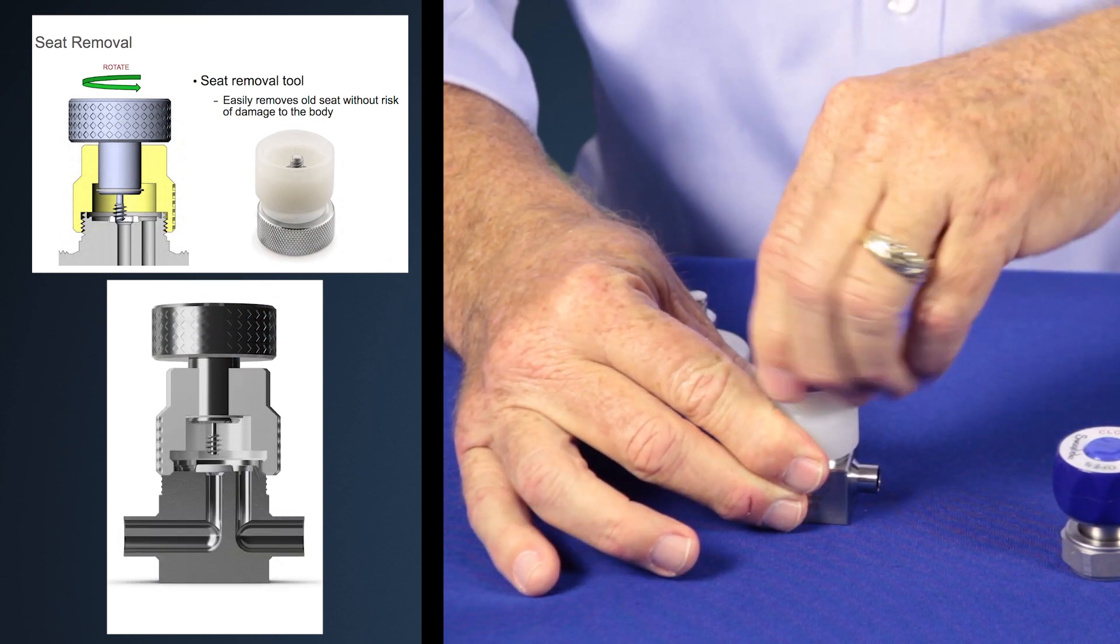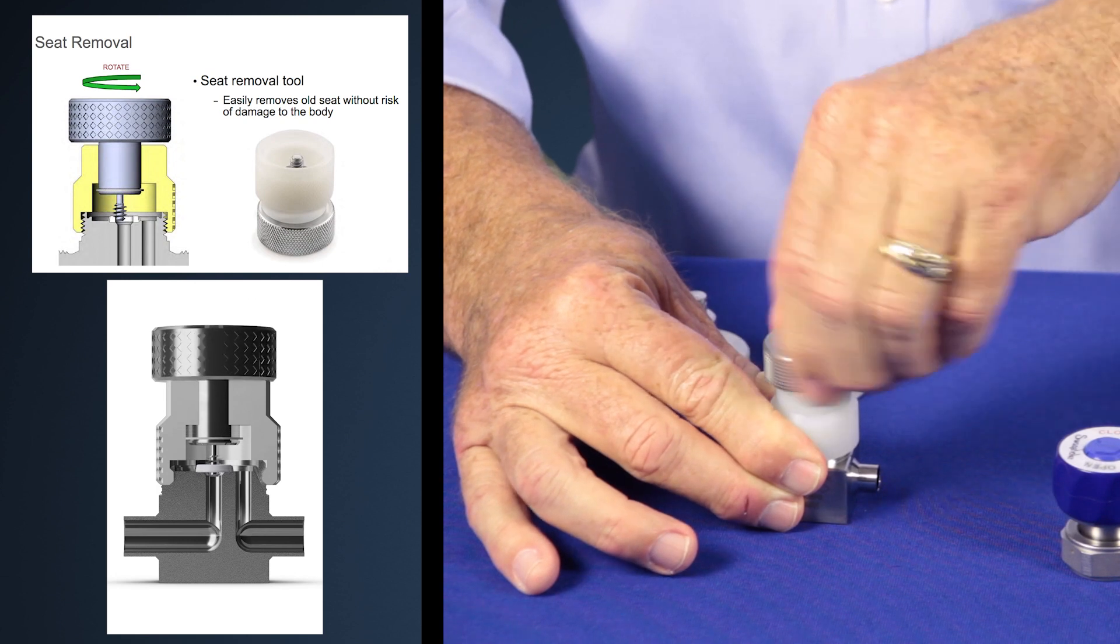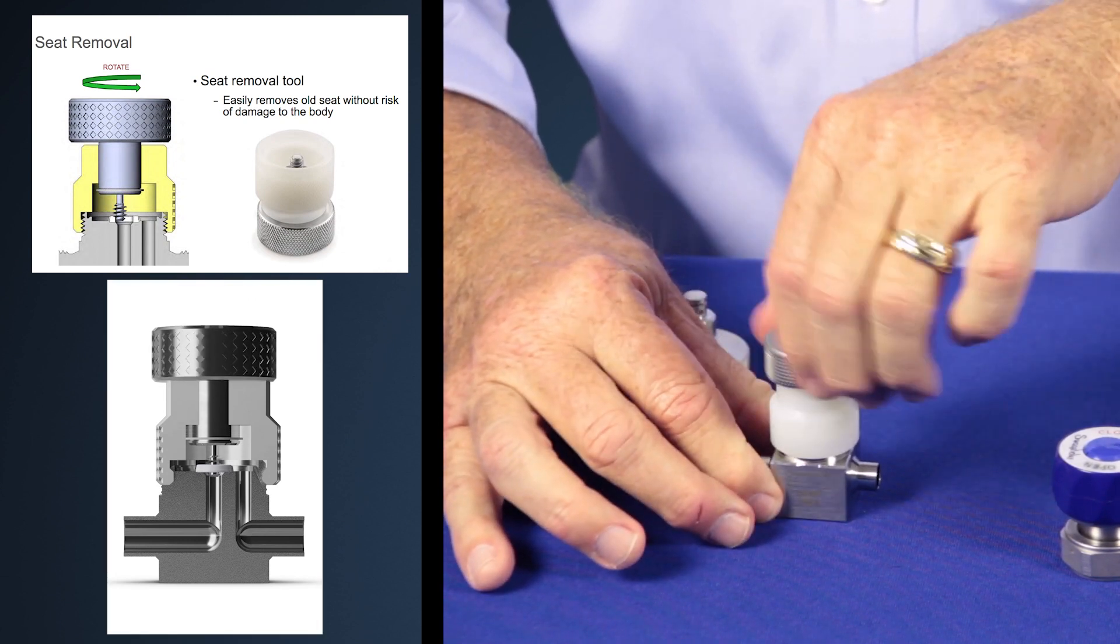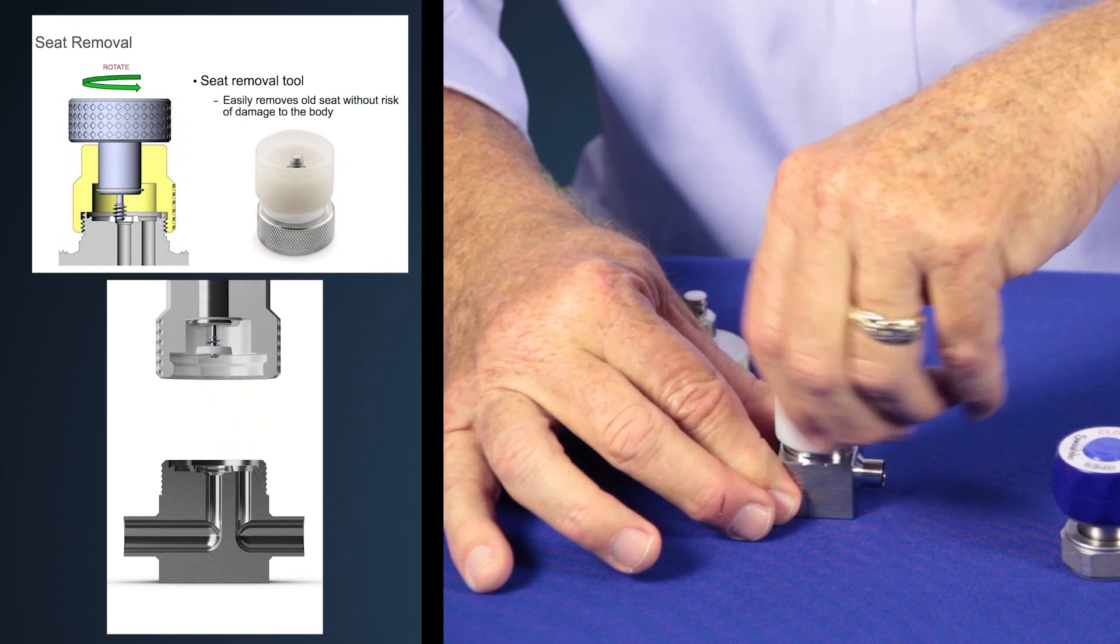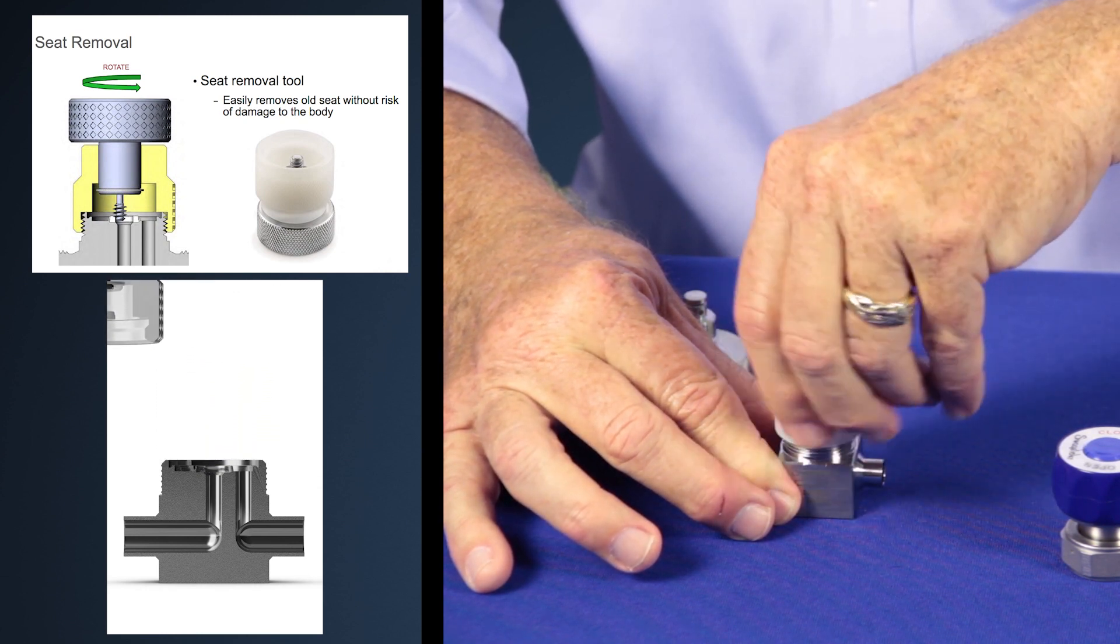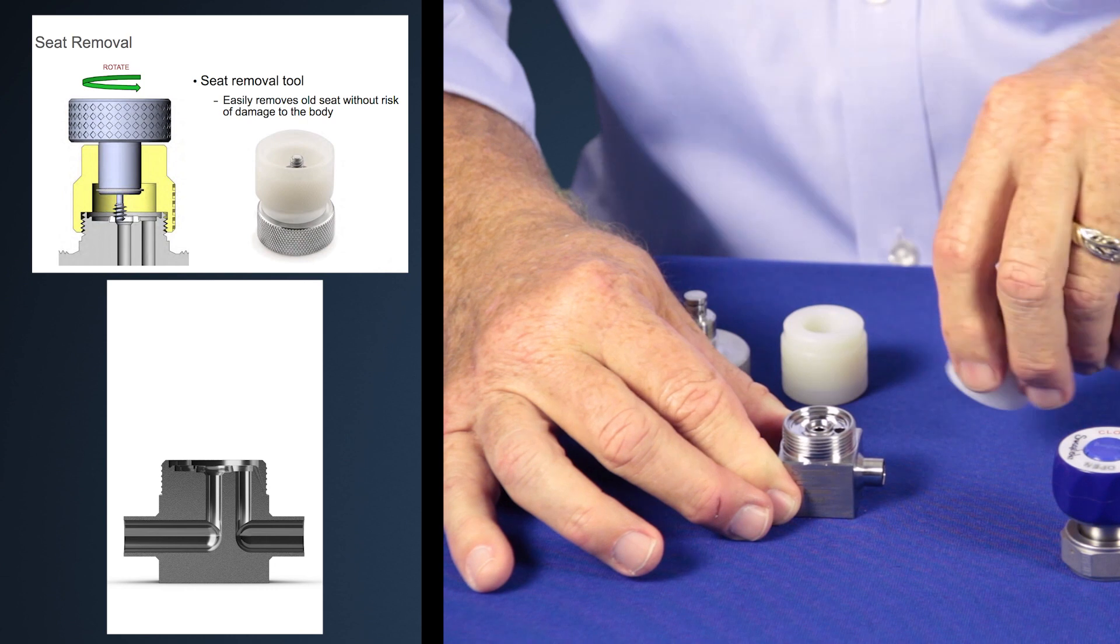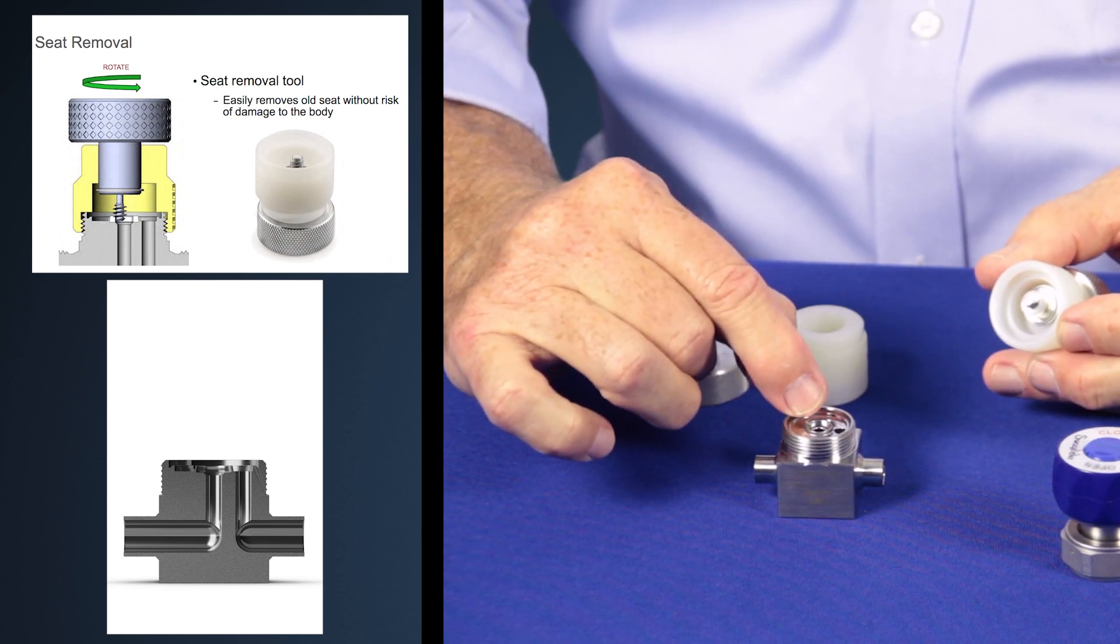You then tighten the nut until it rotates completely freely. Now you remove the seat removal tool and the seat is now removed from the body.